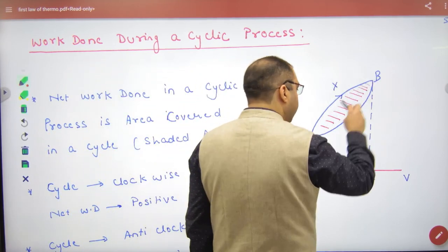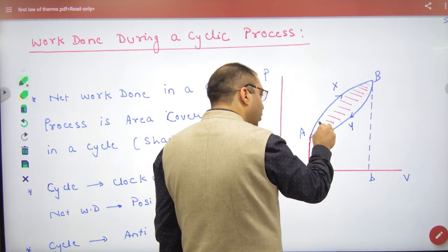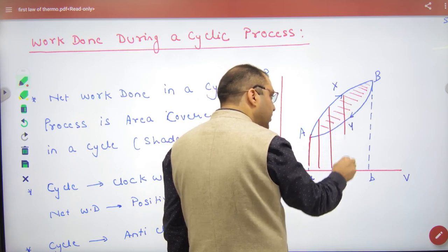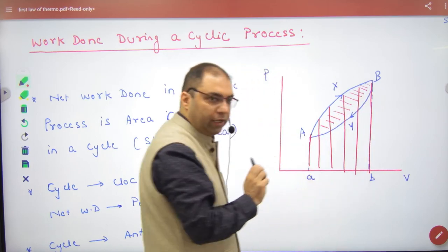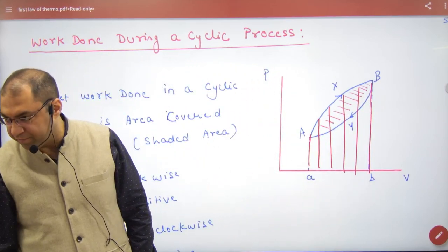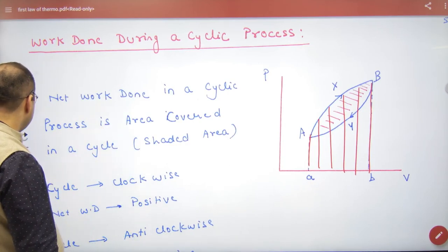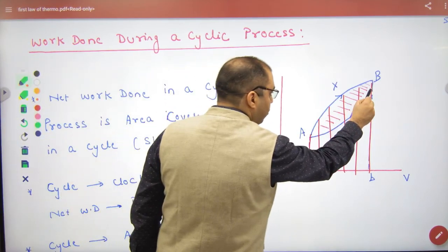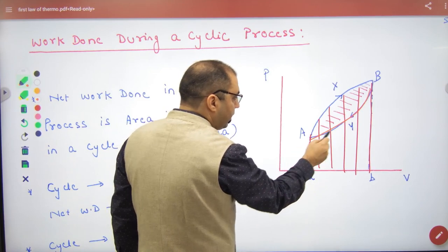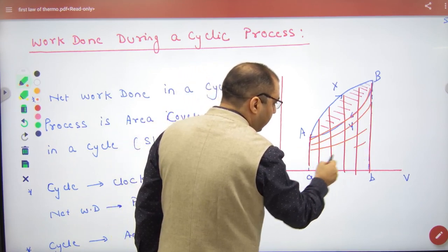When you were doing expansion, what was the net amount of work done? What was the work done? Area under the expansion curve. When you were doing compression, what was the area under the compression curve?